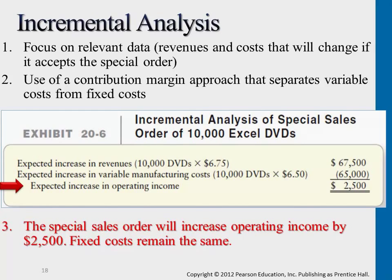Capacity is the first question. The second is whether the incremental sales cover incremental variable costs. If fixed cost remains the same and it does cover the variable cost, then we can accept the special order.